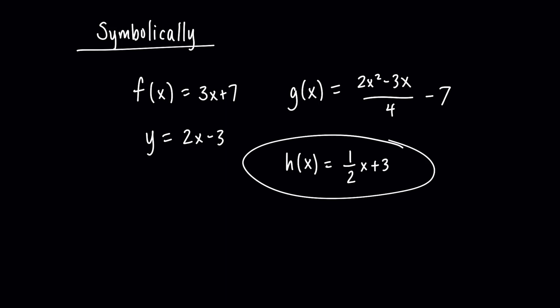So remember this function, because we're going to be talking about this function with tables and with graphs. The nice thing about symbolically representing a function is that it literally tells you the rule. So we said a function is a rule that assigns, it basically tells inputs what to do so that they can become an output. One of the drawbacks of symbolically representing functions is that sometimes it's kind of hard to visualize what a function does. So that's a drawback of symbolically representing functions.